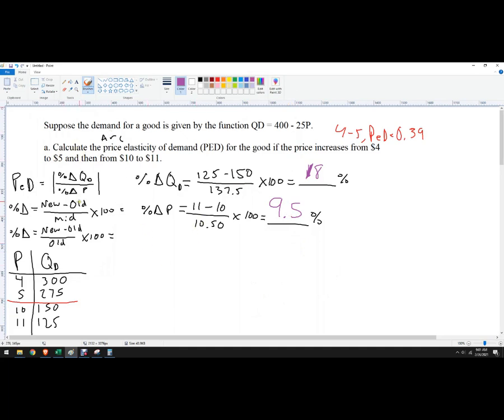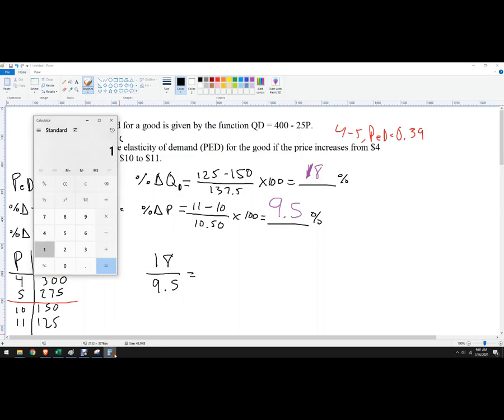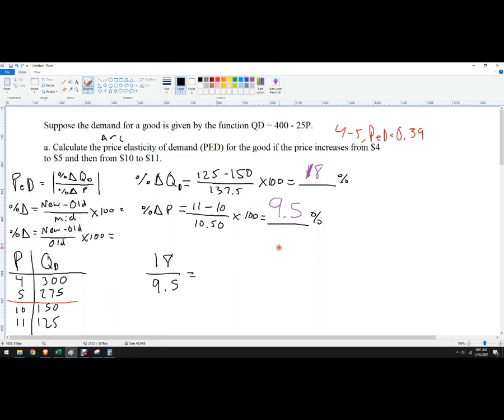So it looks like now we're in the elastic part. 18 over 9.5, let me just run that, just over 2. So 1.89, just under 2. That is the price elasticity of demand going from 10 to 11. So that was how to calculate price elasticity of demand given a demand function.